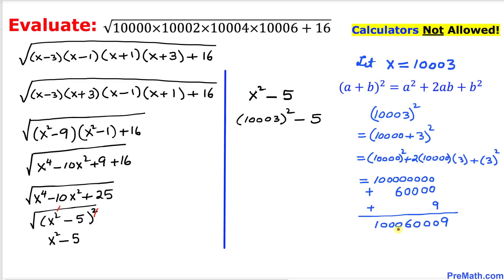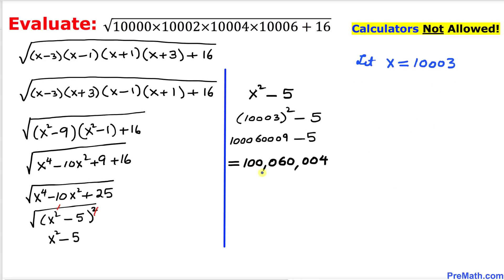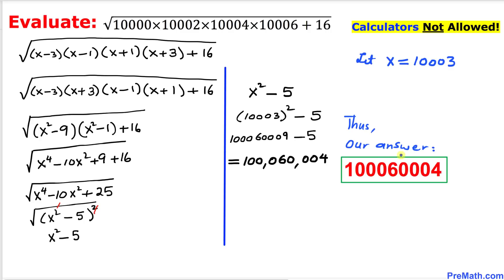So 10,003² = 100,060,009. Subtracting 5, our simplified final answer is 100,060,004. Thanks for watching, and please don't forget to subscribe to my channel for more exciting videos!